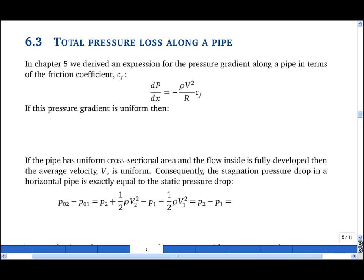In Chapter 5, we derived an expression for the pressure gradient along a pipe in terms of the friction coefficient, Cf. I can rearrange this expression in terms of the diameter, so r is d upon 2, a half rho v squared, which I have to multiply by 2 to balance the half, and then multiply that by Cf.